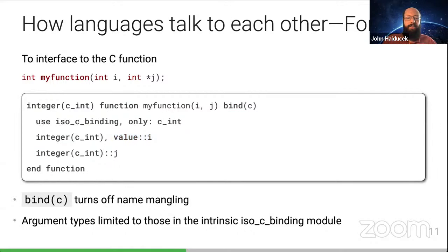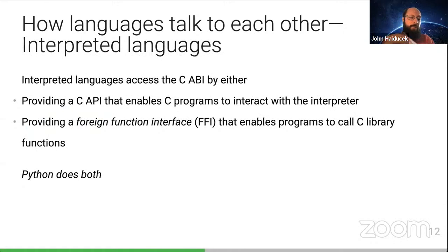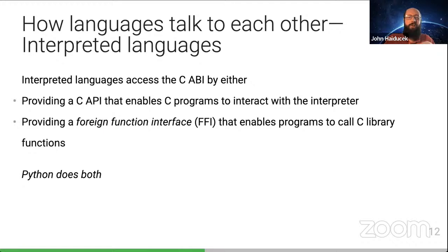So that's how C++ and Fortran interface with C. What do you do in Python to talk to the C ABI? Interpreted languages, including Python, basically have two options. The first is you provide a C API that enables C programs to interact with the interpreter. The second is to provide a foreign function interface that lets your interpreted code load a C library and call functions from it. Python provides ways to do both of these.